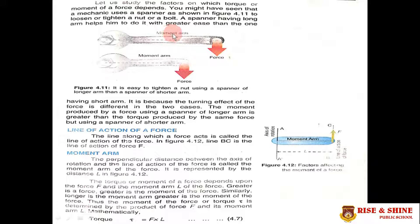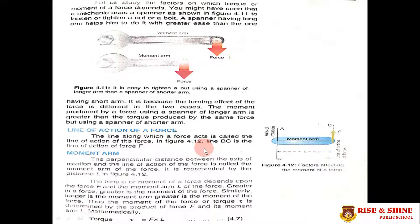The greater the moment arm, the less force we need to apply at the line of action of force, and the more torque we can produce. A spanner with a long arm helps to turn a bolt with greater ease than one with a short arm. The moment produced by a force using a spanner of longer arm is greater than the torque produced by the same force using a spanner of shorter arm. The line along which a force acts is called the line of action of the force.